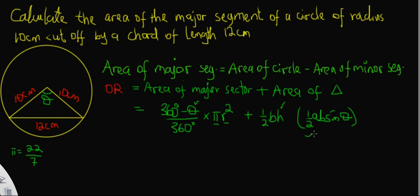If I use the alternative formula ½ × A × B × sin θ to calculate the area of the triangle, the value of A is known — it's 10 cm — and B is also known, which is 10 cm. So all I need is the angle θ, the angle subtended at the center of the circle. Let's now work out how to calculate the value of θ.